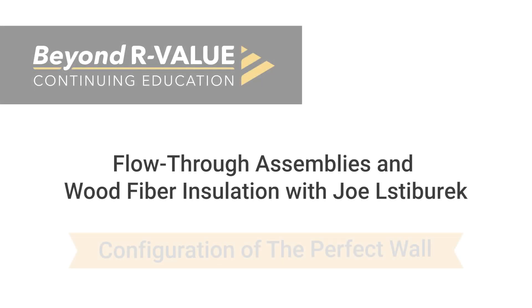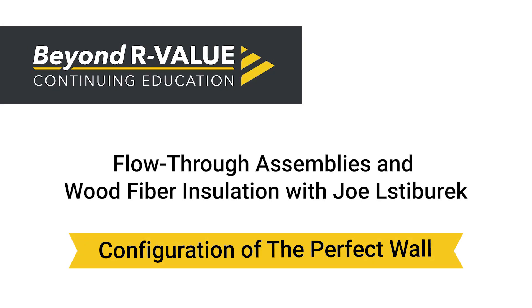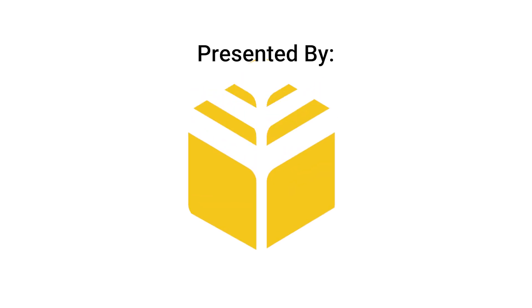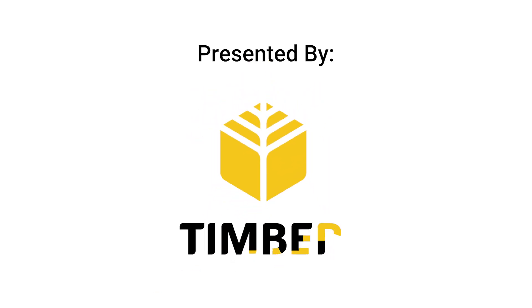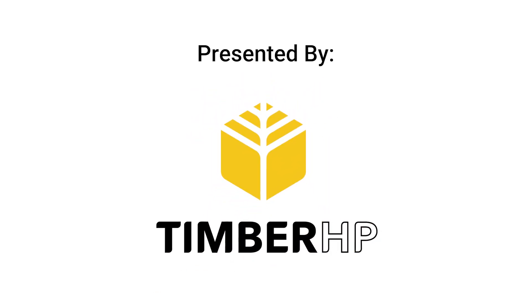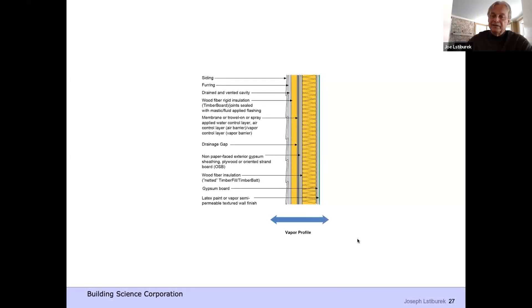So configurations of the perfect wall - we're going to look at a non-flow through assembly first. This is the original history of the perfect wall from the 1950s where we'd have a masonry wall, you put your membrane on the outside of it, that's your water control, air control, and vapor control. You put your thermal control on the outside and you back ventilate and drain your cladding.